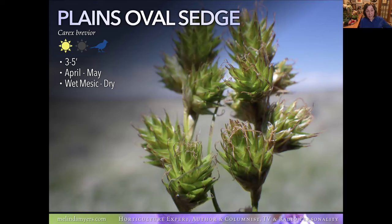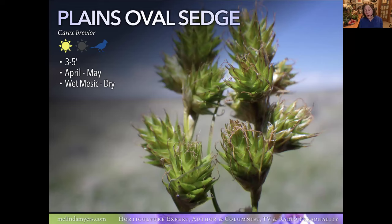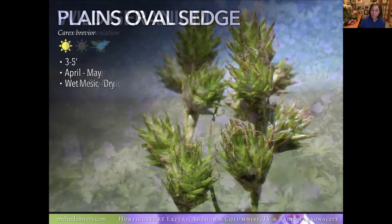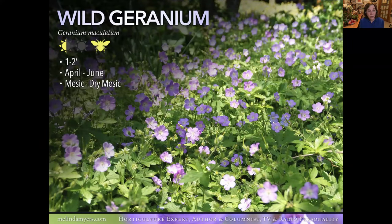Now moving into more shaded growing conditions. Plains Oval Sedge will take full sun to full shade — look at those unique seed heads. It's a large plant that takes it wet to dry, making it perfect for a rain garden. It can go in the center portion, and those grass-like leaves with unique seed heads add great texture and unity. Birds will come and feed on the seeds in winter. Very adaptable to both light and moisture conditions.